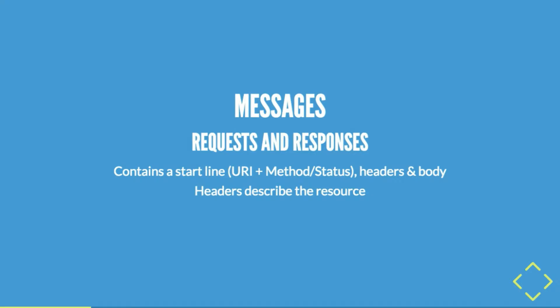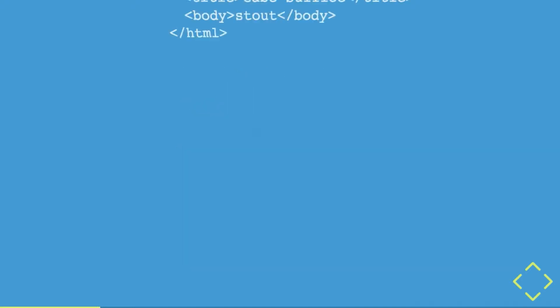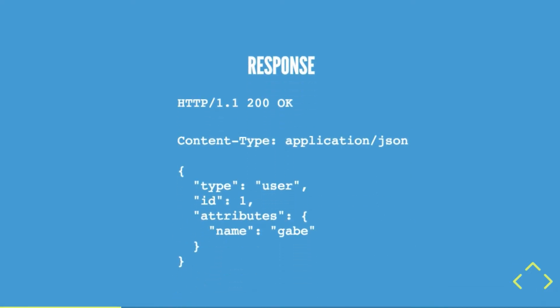Messages encompass all of that. They always start with a single start line — it's a text-based protocol. They have a URI and a method, or a status that they return back. They have headers and a body, and headers are the things that describe the body and describe the communication. A content-type header of 'text/HTML' says everything below this start line is going to be HTML — that's how you should interpret this thing. A request doesn't have to contain a body. The response has a start line, 200 OK, and describes what it sends back.